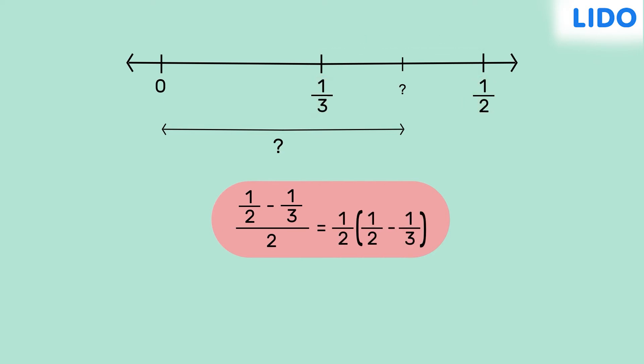Hence, to find its distance from 0, we must add 1 third to this. This represents the rational number exactly halfway between 1 third and half.